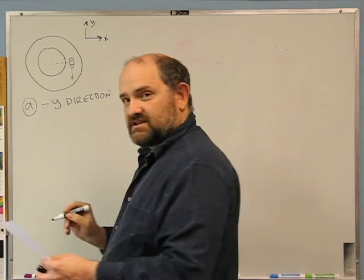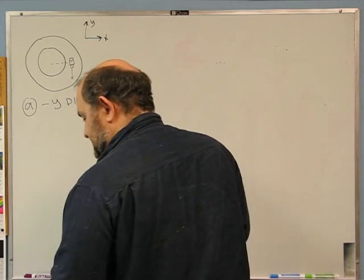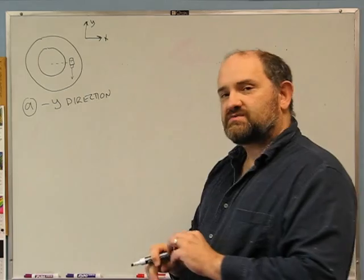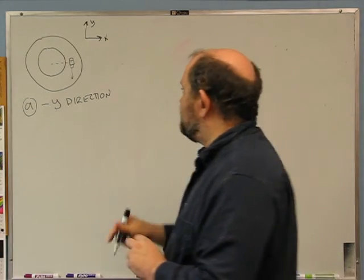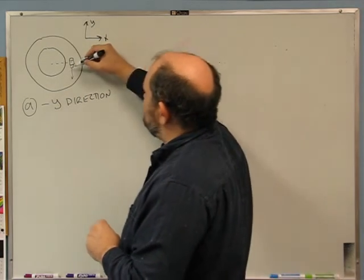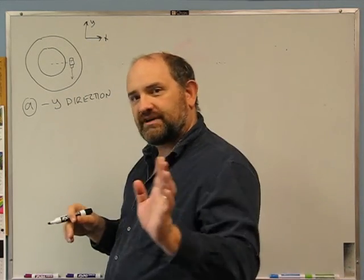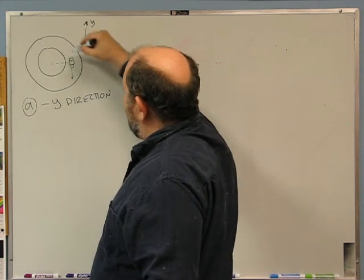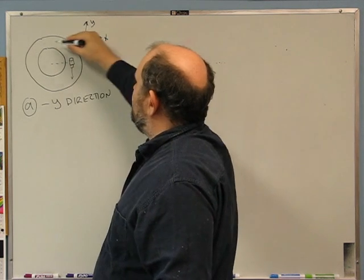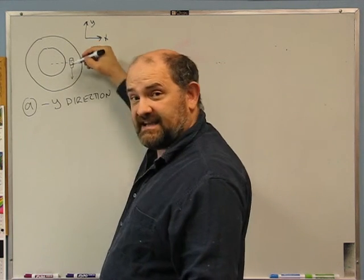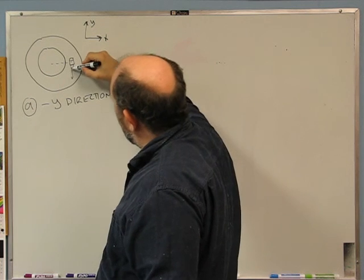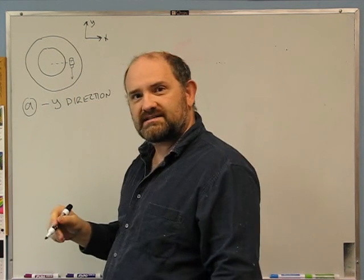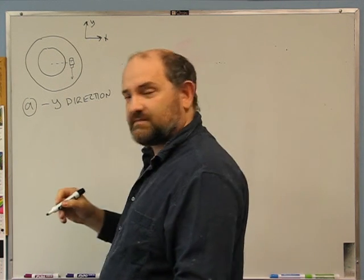Now here's the interesting one: what is the direction of the acceleration of the car? You want to think about this. You're always tempted to say it's straight ahead, but it's not — because the car is moving around the track at constant speed. If its speed is constant, there can't be any component of acceleration along the same direction as the speed.